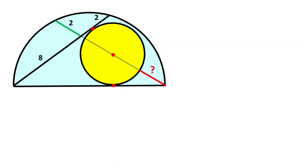In this video we have one circle, one semicircle, and this length is given as 8, and these two lengths are given as 2 units. These are tangent points, here is the center of the yellow circle, and the length of the red line is asked.